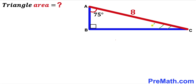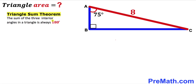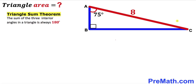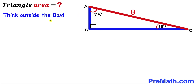Let's focus on right triangle ABC and recall the triangle sum theorem. According to this theorem, the sum of the three interior angles in a triangle is always 180 degrees. We can see one angle is 90 degrees and another is 75 degrees, so the third angle has got to be 15 degrees.